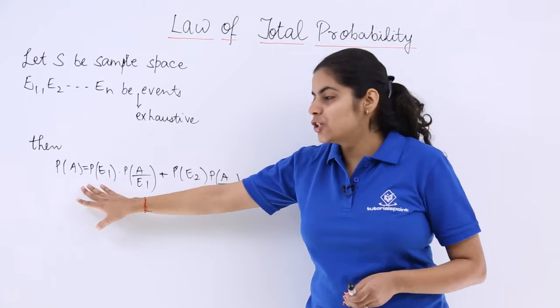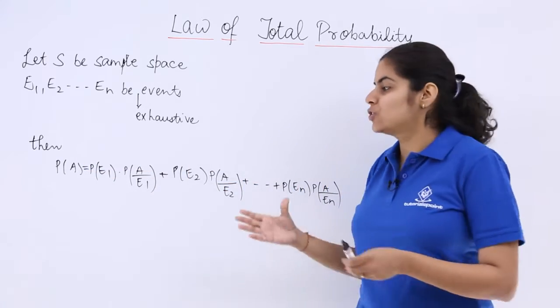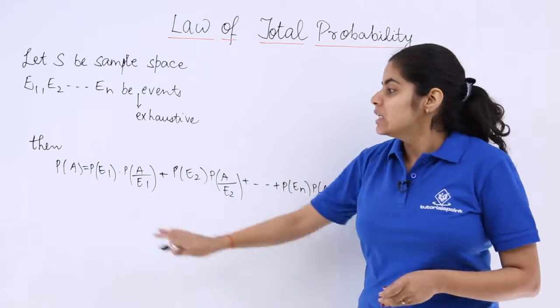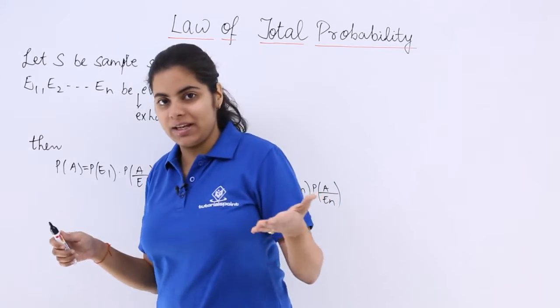Now if we are talking about A, A has a probability which can be computed in this manner. If you don't remember this formula, you can remember the tree diagram.